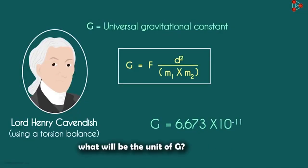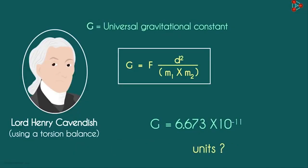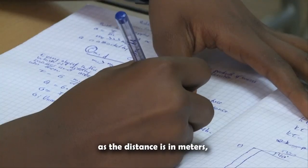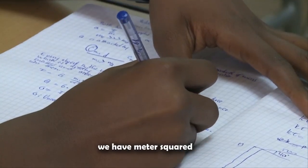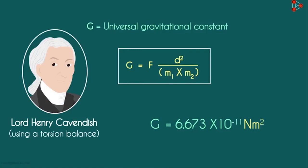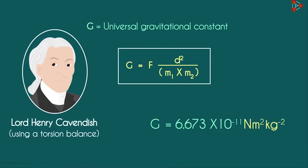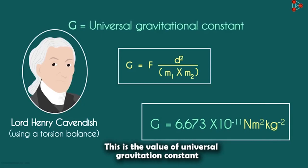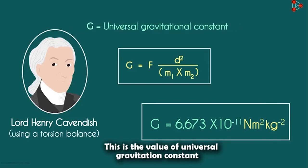The universally accepted value of G is 6.673 times 10 raised to negative 11. What will be the units of G? Force is in newtons, distance is in meters so we have meters squared, and mass is measured in kilograms so we multiply with kilograms raised to negative 2. This is the value of the Universal Gravitational Constant.